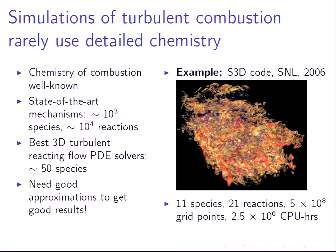You saw this in Jack's talk earlier in the meeting. So in order to simulate the chemistry, we need some good approximation of the chemistry inside the flame to get good results. An example of this is S3D, run on Jaguar, developed by Sandia and Oak Ridge. The latest data I could pull up on the chemistry they used in that simulation was from 2006, and they used a reaction mechanism of 11 species and 21 reactions — way smaller than the state-of-the-art you would see in a chemistry journal.